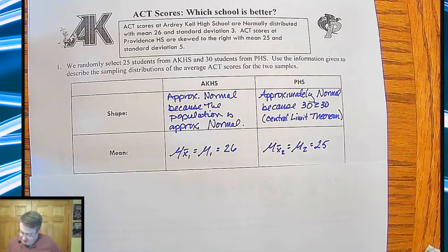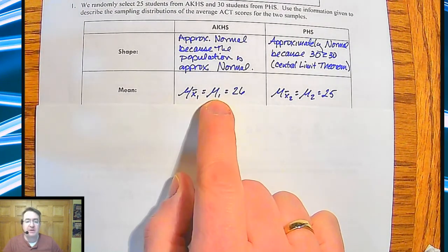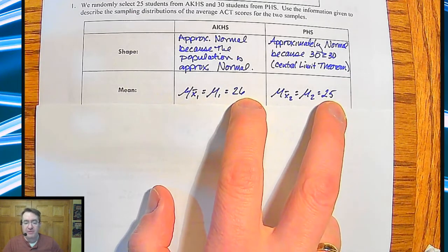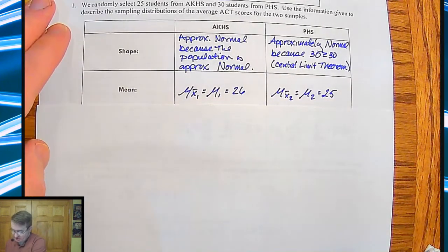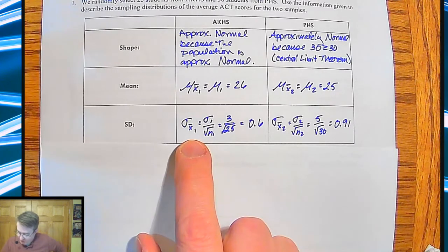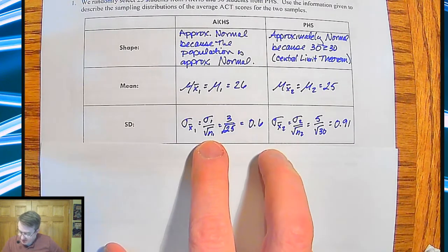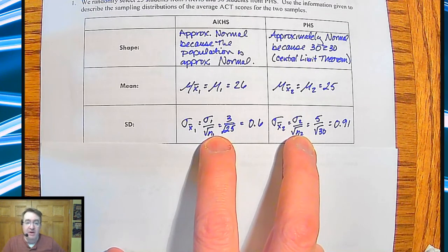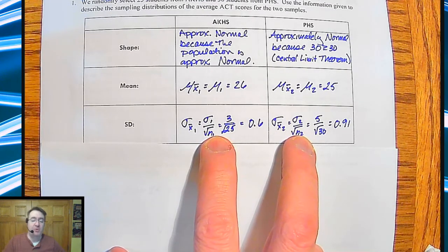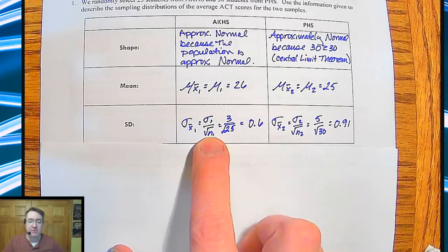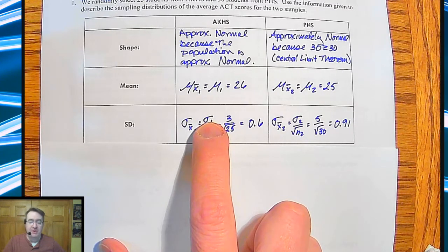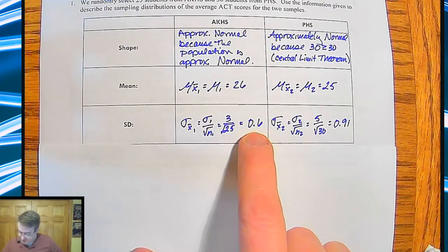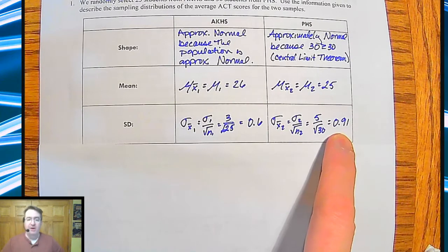Their means, pretty straightforward. The sampling means are the same as the population means, so we get 26 and 25. And then for standard deviations, remember what we're going to do is the sample distributions end up being the standard deviations of the populations divided by the square root of the sample size. And the reason why it's the square root is because standard deviation is the square root of the variance. And so we end up getting standard deviations of 0.6 and 0.91.